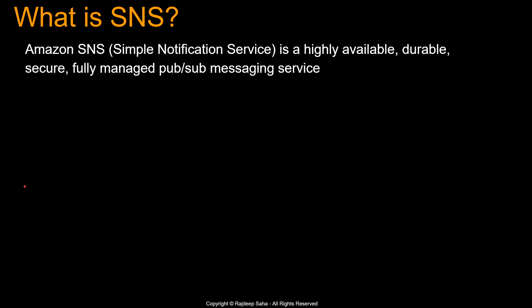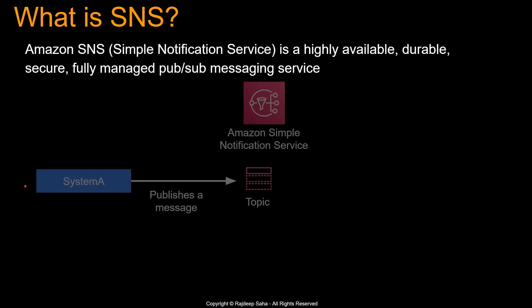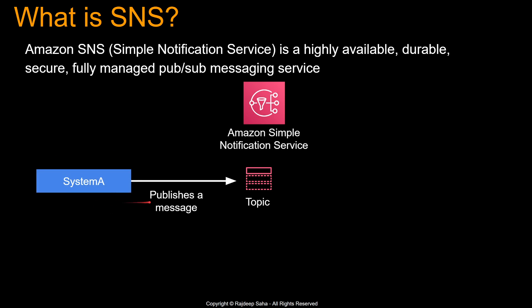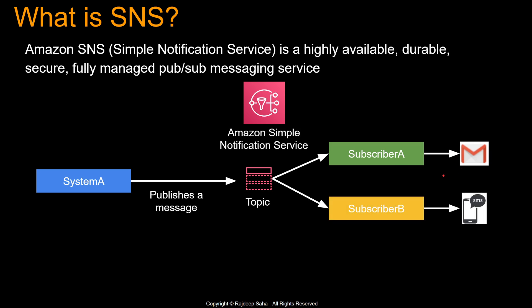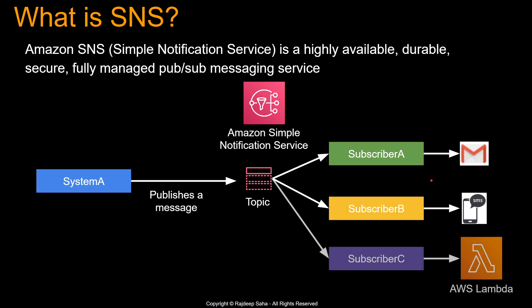What is SNS? Amazon SNS, Simple Notification Service, is a highly available, durable, secure, fully managed PubSub messaging service. So how does PubSub work? Let's say you have a system. System A publishes a message to a topic under SNS, and there could be multiple subscribers. Subscriber A subscribes to this topic, so anytime a message comes, the subscriber is going to get the message — in this case, it's going to trigger an email. Subscriber B and Subscriber C can fire an AWS Lambda.